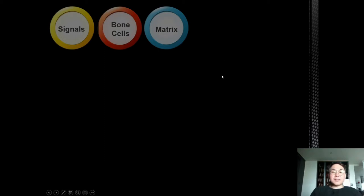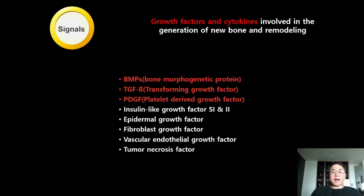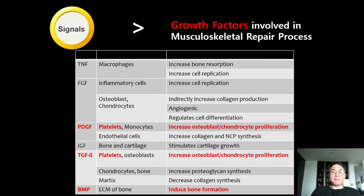Let's talk about the first factor: signals. Cytokines and growth factors can be signals for bone regeneration. There are many important growth factors and cytokines involved in regeneration and remodeling of new bone, but I want to emphasize three: BMP (bone morphogenetic protein), TGF-beta (transforming growth factor beta), and PDGF (platelet-derived growth factor). These are very important signaling molecules for successful bone regeneration or bone repair.